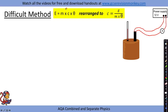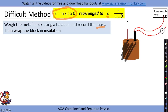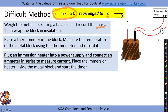We still weigh the metal block using a balance to record the mass, wrap it in insulation to prevent heat transfer, and place a thermometer in the block to measure the temperature before heating. The difference is that this time we plug the immersion heater into a power supply and connect an ammeter in series to measure the current, rather than using a joule meter. We place the immersion heater inside the metal block and start a timer.